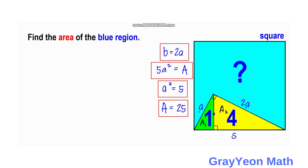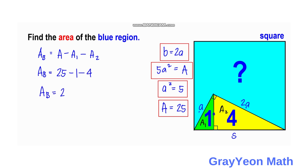For the final step, it is now easy to find the area of the blue region. The area of the blue region is simply the area of the square minus the areas of the green and yellow triangles. So area of blue equals area of square minus A-sub-one minus A-sub-two, which is 25 minus 1 minus 4. Simplifying, the area of the blue region equals 20 square units, and that is our answer.